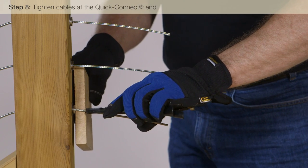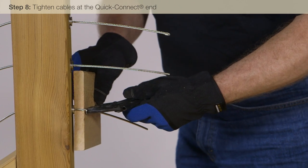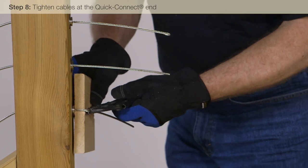When tensioning on longer runs of cable, you can use a pair of vice grip pliers and a block of wood for leverage to help pull more cable through the quick connect fitting.